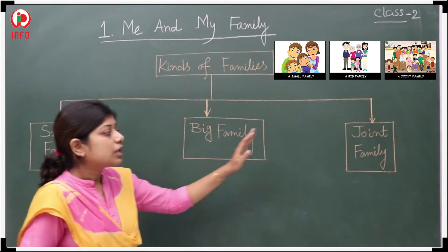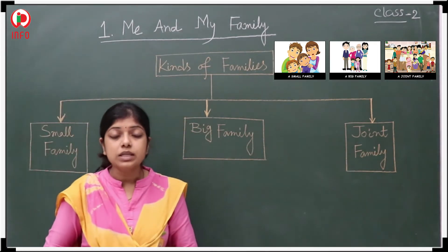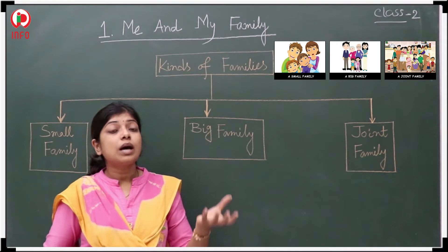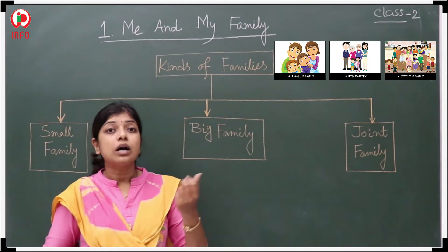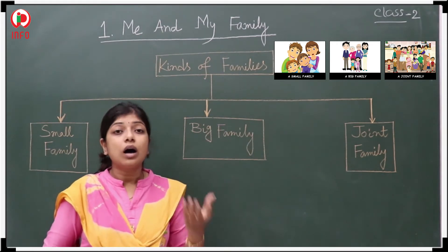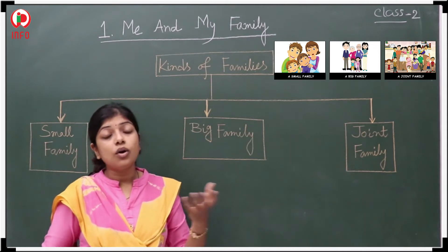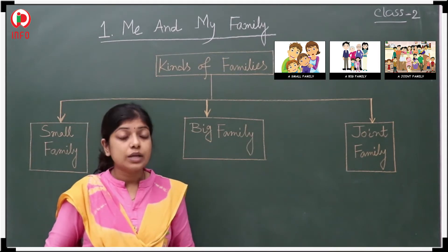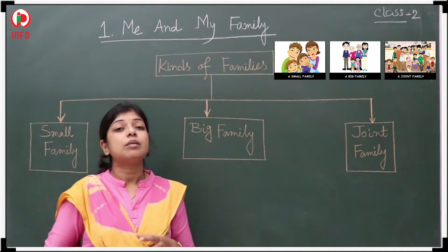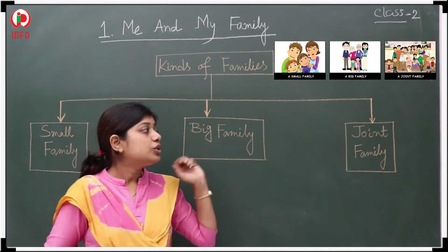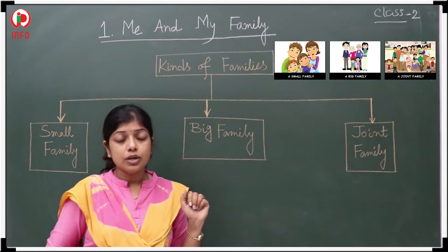Next is the joint family. Joint family means when the parents, grandparents, uncles, aunts, and their children all reside together. That family is called a joint family.